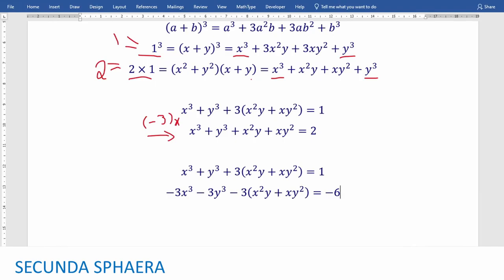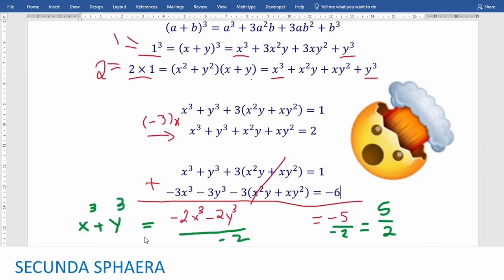And now the best part of all is that we are just going to add these two equations. If we add these expressions, we are going to just cancel the 3 times x squared y plus xy squared. The right hand side is going to be equal to negative 5. The left hand side is going to end up as minus 2 x cubed minus 2 y cubed. We just divide both sides by negative 2. And we are going to end up with 5 over 2. And on the other side, we are going to end up with x cubed plus y cubed, which is what we needed to know.